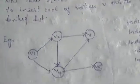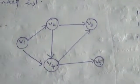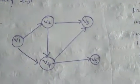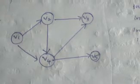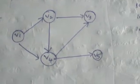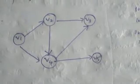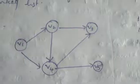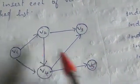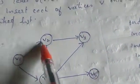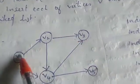Now I am going to show you an example. This is the first vertex in the graph. We have vertices V1, V2, V3, V4, V5. This is a directed graph, and this is where the direction is.